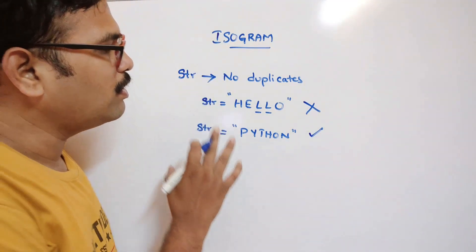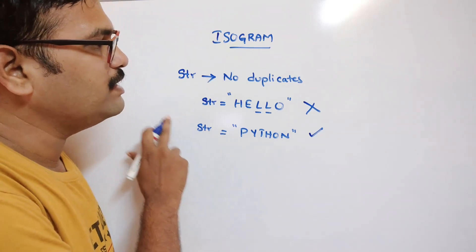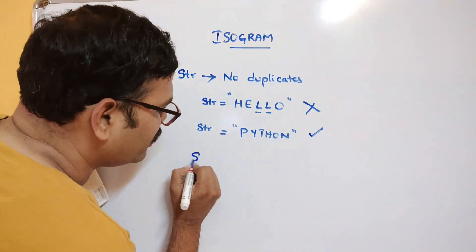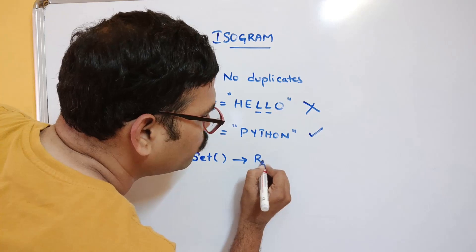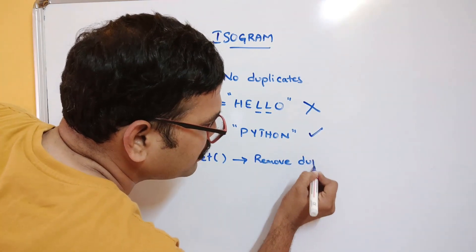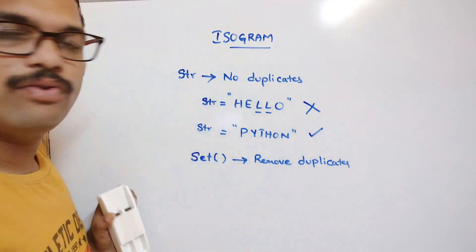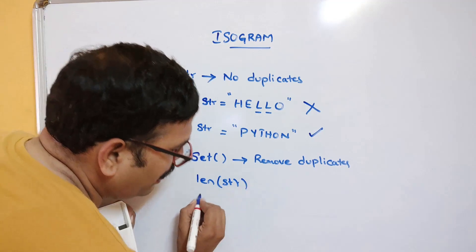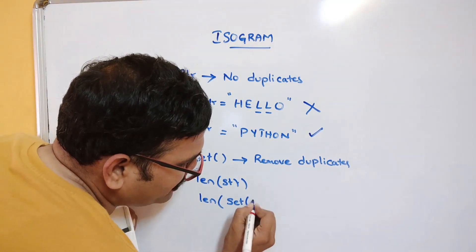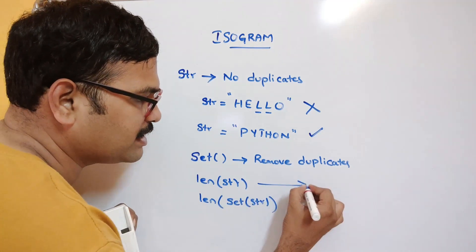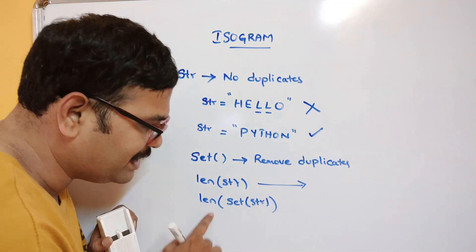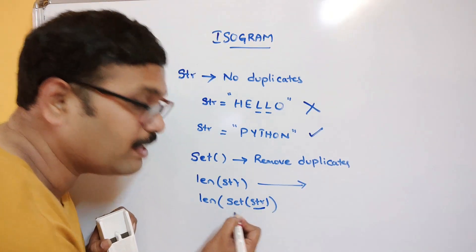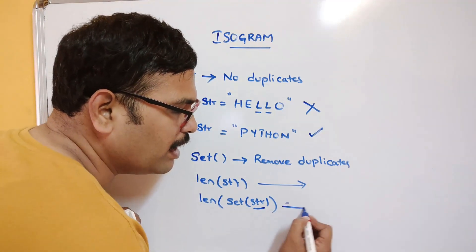Now, how do we write the logic to find an isogram? There are two ways in Python. First, Python has a set function which can remove duplicates. So one thing we can do is find out the length of the string and the length of the set of the string.